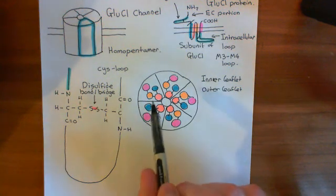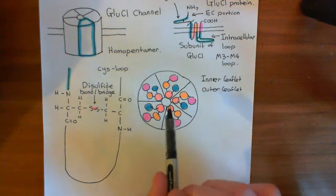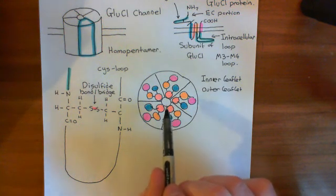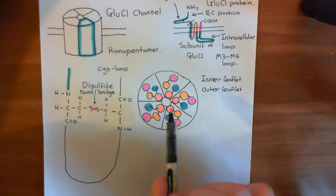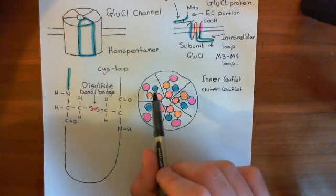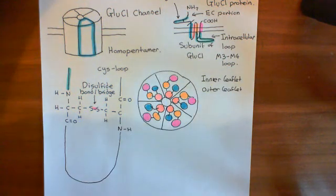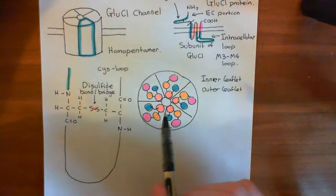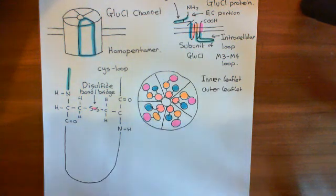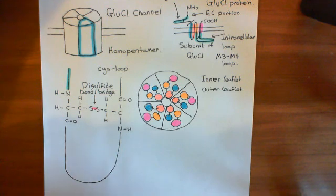In the next video, we'll start looking at the structure of these M2 alpha helices in more detail — the pore-forming alpha helices. We'll then move on to looking at the extracellular domain, which is linked off the M1 alpha helix on the extracellular side, and then the intracellular domain made up by the intracellular loops between the M3 and M4 membrane-spanning alpha helices.